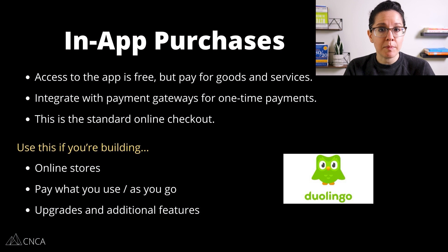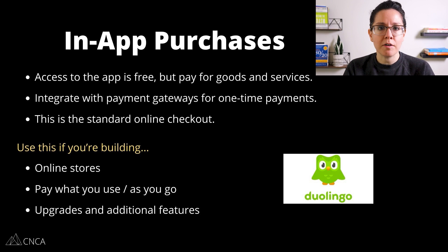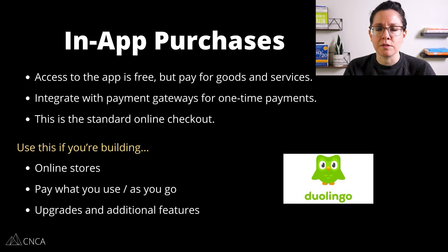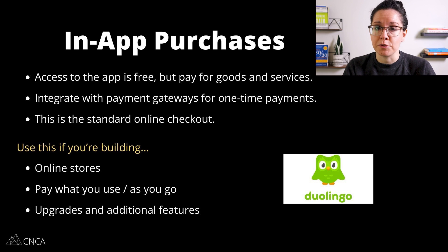Duolingo, a language learning platform, is really popular for this — and a lot of games are too. Users access the application for the most part for free, and then if they want to enhance their experience with additional add-ons or premium upgrades, they make a single one-time payment. It's a predetermined amount — not a percentage-based charge, nor a subscription. They go through a standard online checkout form, enter their credit card details, see the amount, make the payment, and get immediate access if it's a digital asset, or kick off a shipping sequence for a physical product.